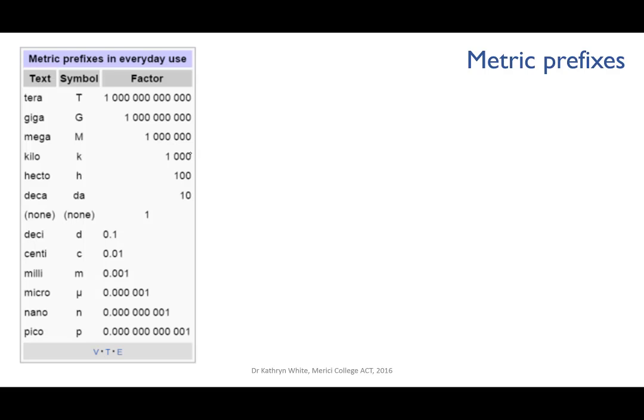Some of these prefixes you know already. For instance, kilogram has one built in. Kilo means one thousand. So one kilogram is equivalent to one thousand grams. The prefixes you most need to be familiar with are these. Kilo, deci, centi, milli, micro, and nano.